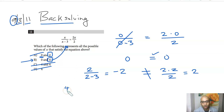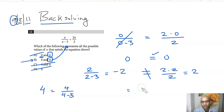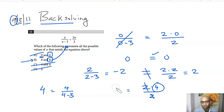You can confirm x equals 4 is the answer. Plugging in 4: the left-hand side is 4 divided by 4 minus 3, which equals 4. The right-hand side is 2 times 4 divided by 2 — the 2s cancel — giving 4. It checks out.